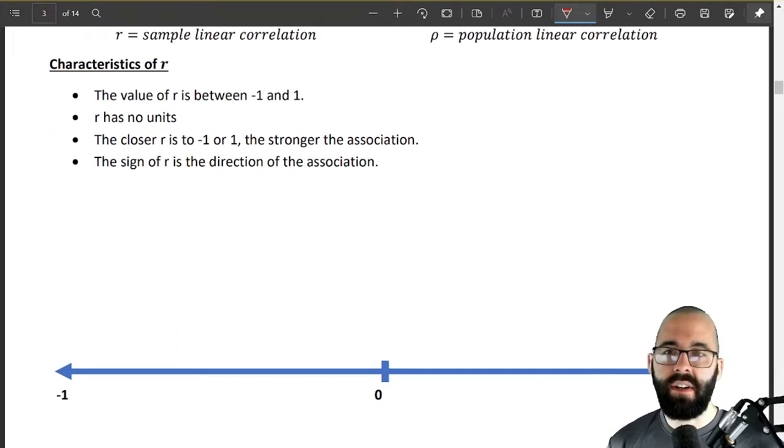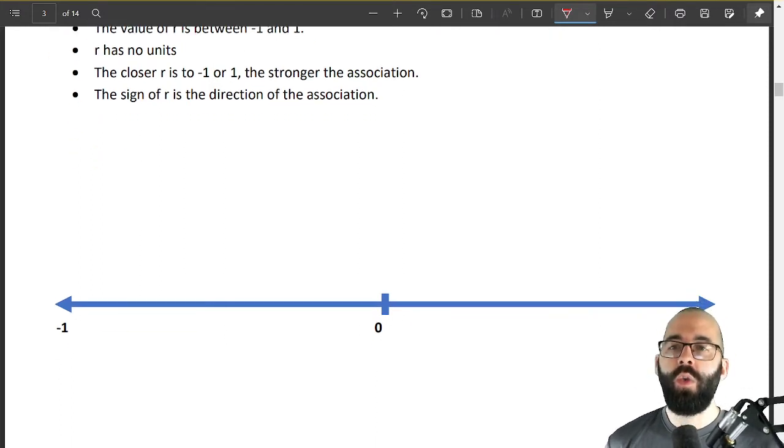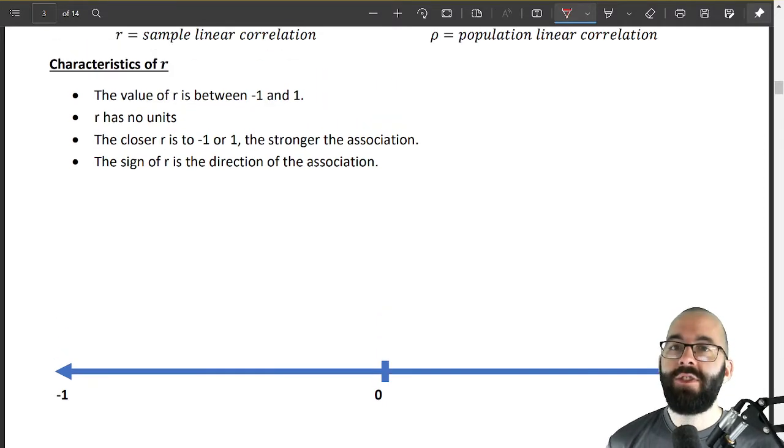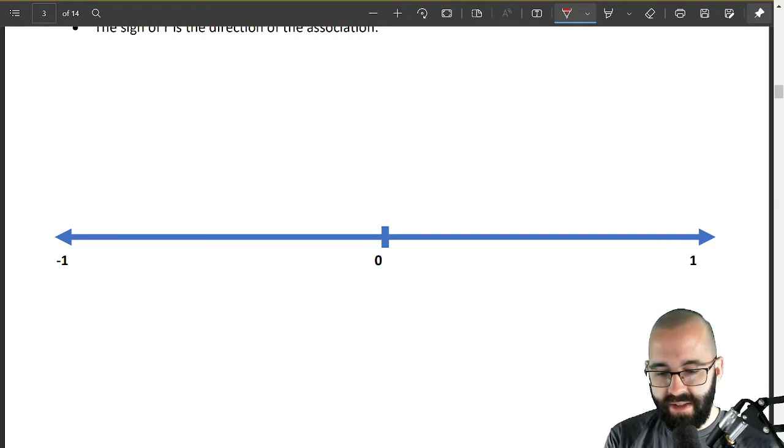Let's introduce this a little bit first. So some things about this r, this linear correlation coefficient: r is always between negative one and one. Okay, always between negative one and one. So on this little number line, if we think of how r works, the biggest or smallest I can get is always negative one or one.